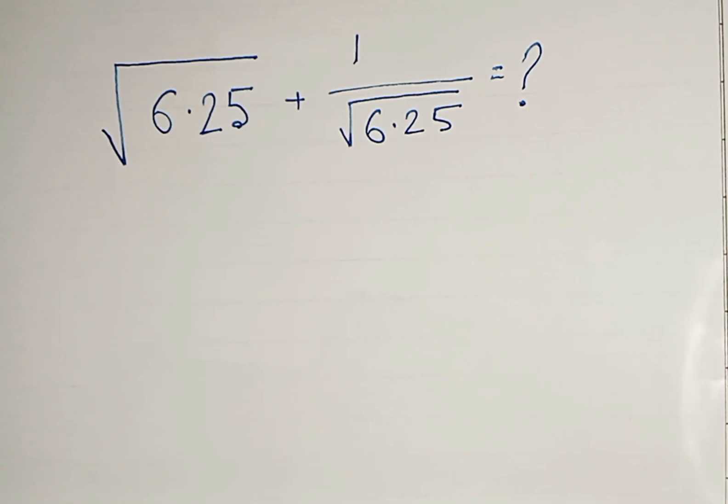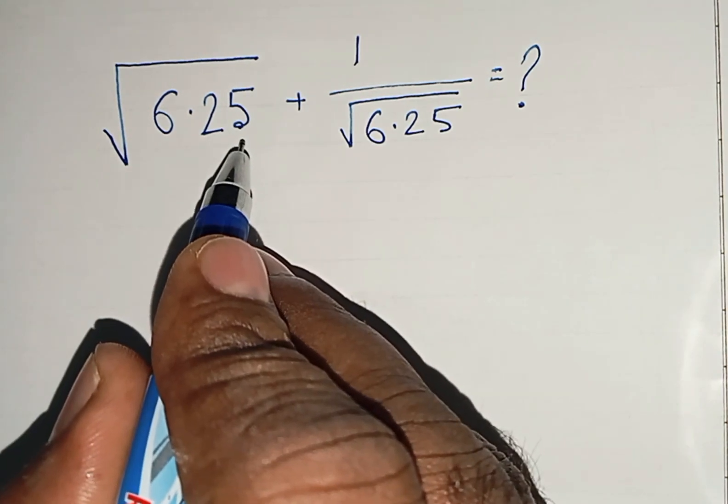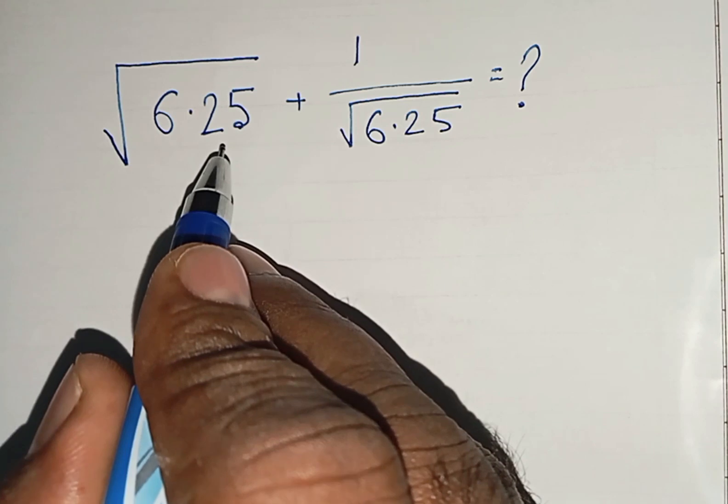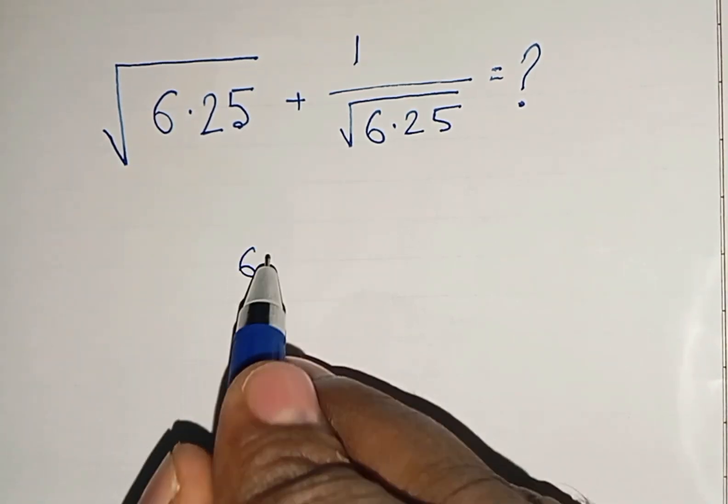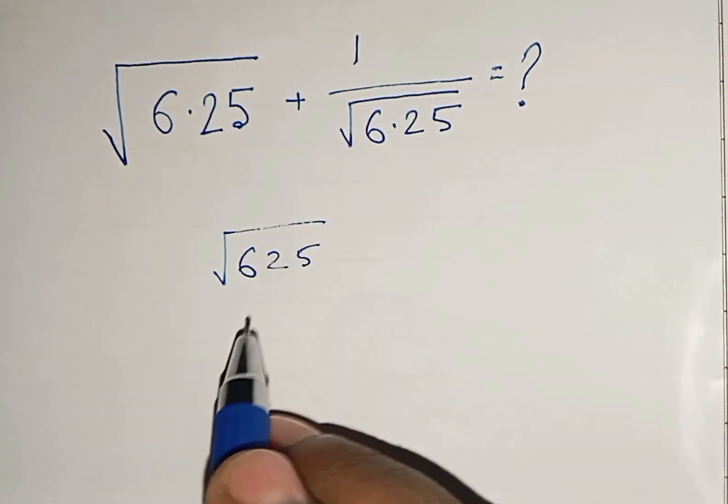Today's topic of discussion is how we can solve the problem: root of 6.25 plus 1 by root of 6.25. Now, we know root of 6.25. If it is only 625, then what would it be? It will be 625 under root.